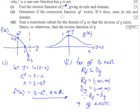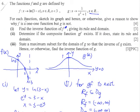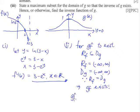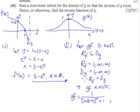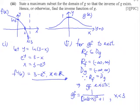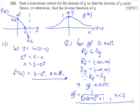State its rule and domain. To find gf, we substitute f into g. Substituting f(x) = ln(3 minus x) into g gives us 1 over [ln(3 minus x)] squared plus 1. The domain of gf is actually the domain of f, which is x less than 3. So this is our gf with its domain.